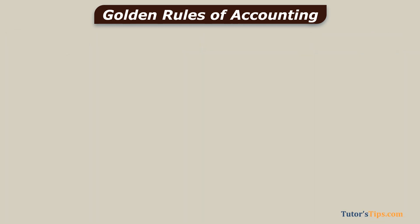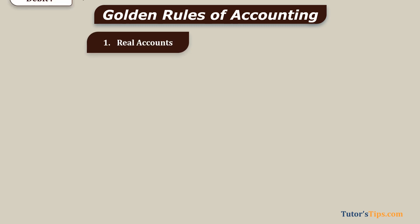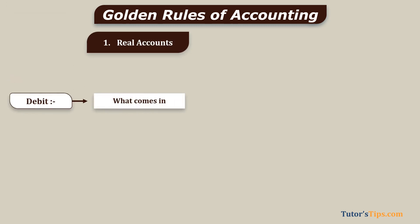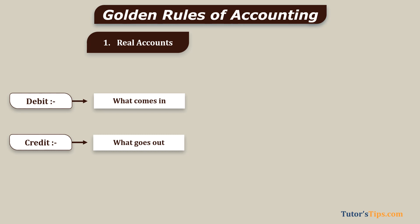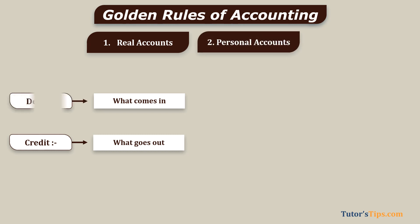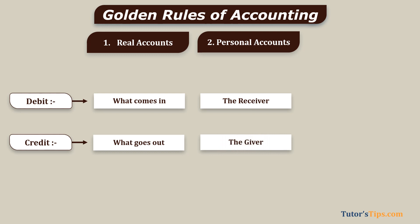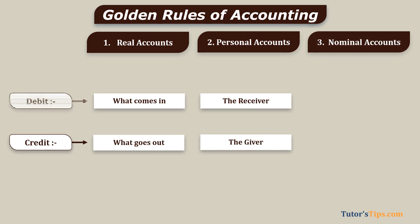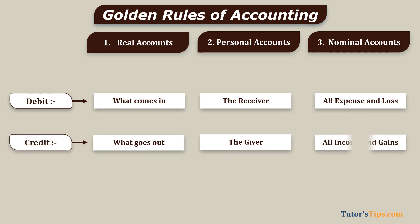After understanding types of accounts, the question arises: what do the rules say? For Real Account: debit what comes in, credit what goes out. For Personal Account: debit the receiver, credit the giver. For Nominal Account: debit all expenses and losses, credit all incomes and gains.